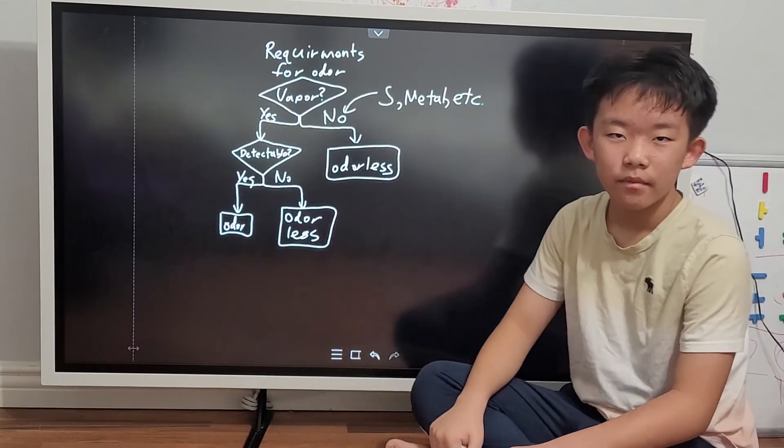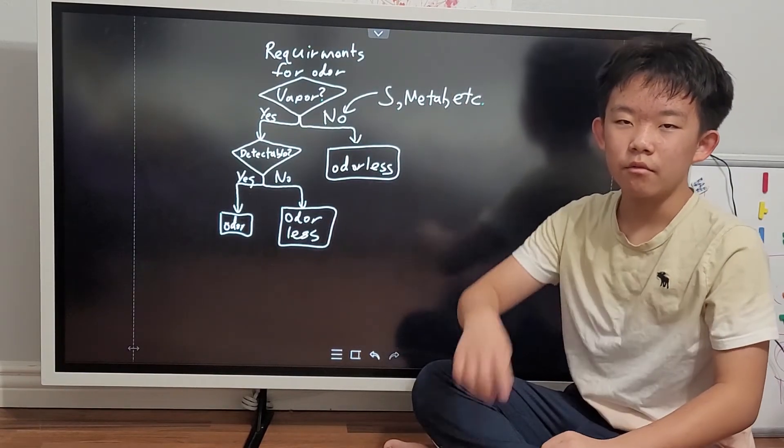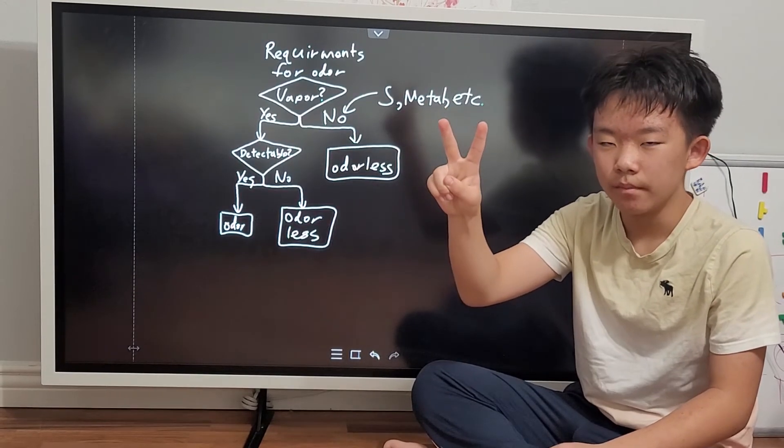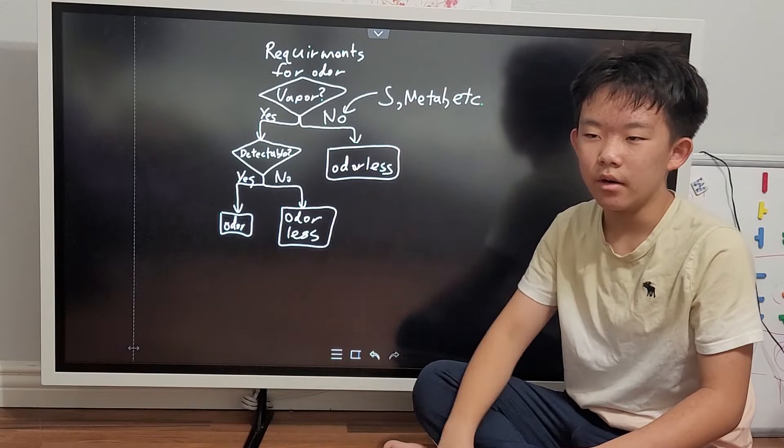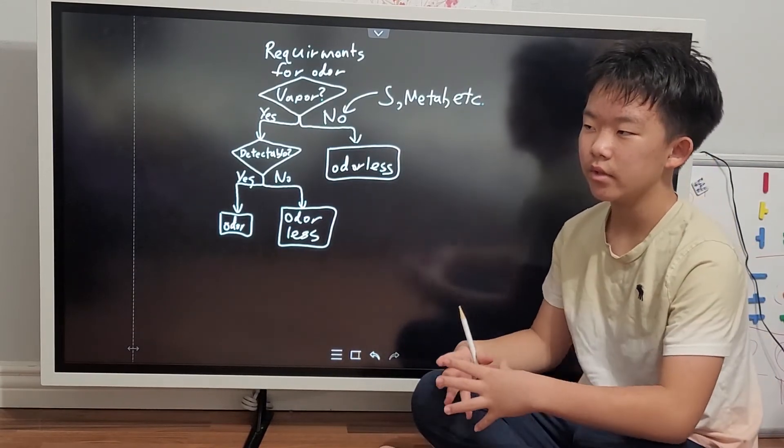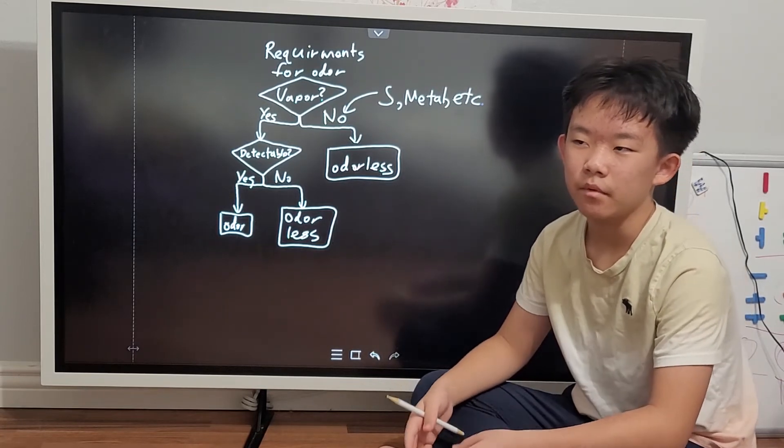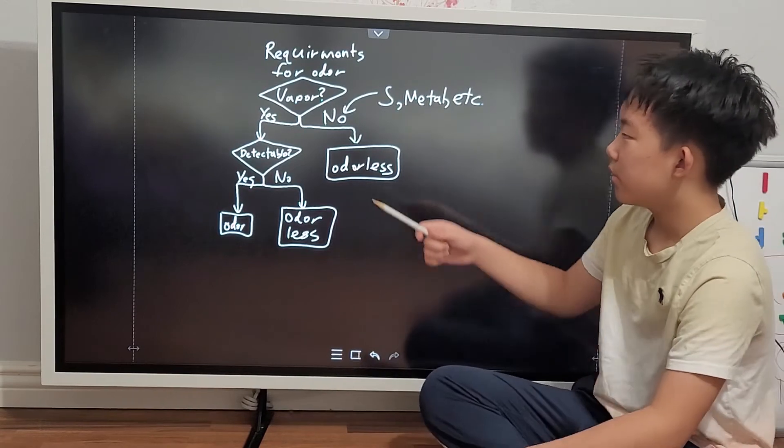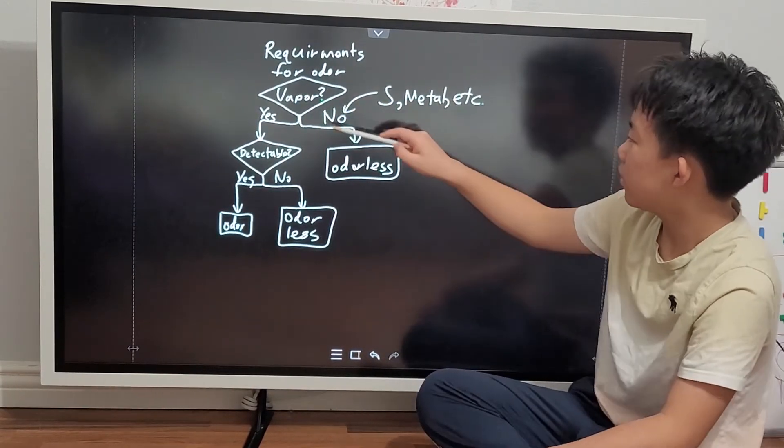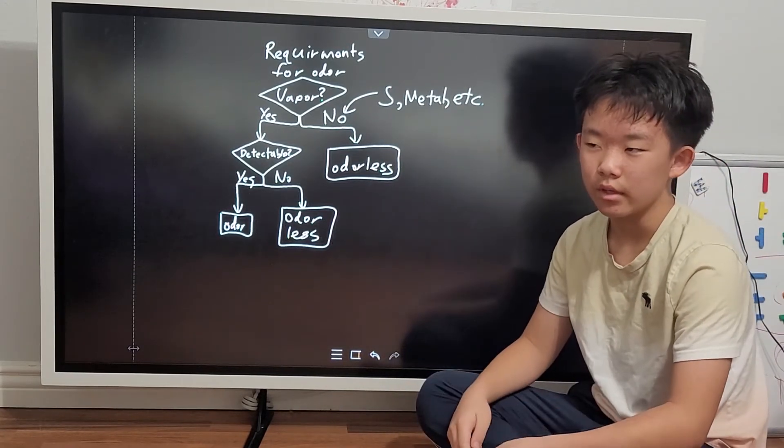Now let's look at two requirements for smell. Number one is, does it release any vapor? Two, does it release a detectable amount? For example, if you take sulfur or metals, which are often blamed for odor, they actually don't release any vapor. So the first question, does it release any vapor, we're going to say no, and therefore sulfur and metals are odorless.